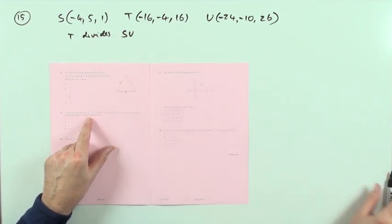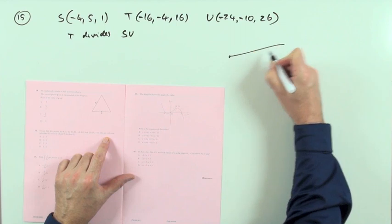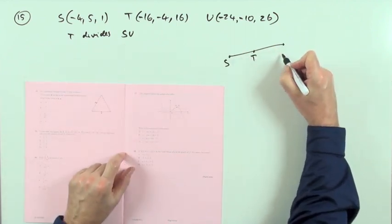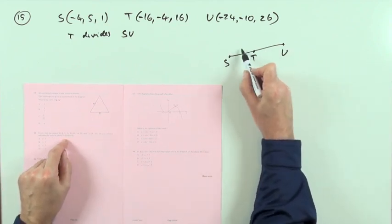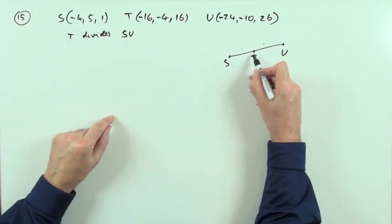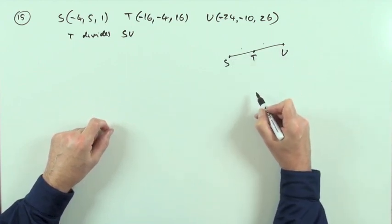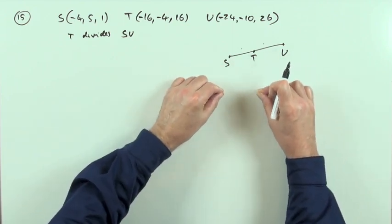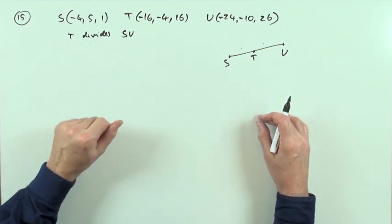Number 15: here are three three-dimensional points which are collinear — lying in a line. T divides the segment from S to U, and you need the ratio of the two parts. You don't need to find the complete vectors ST and TU with all three components, because if they're collinear, each component will divide in the same fraction.